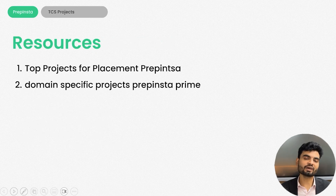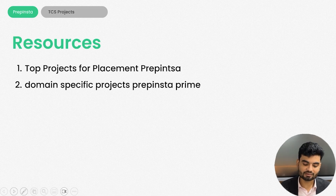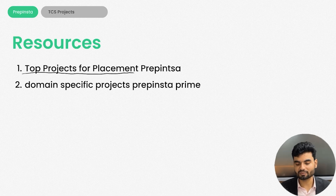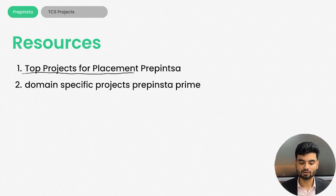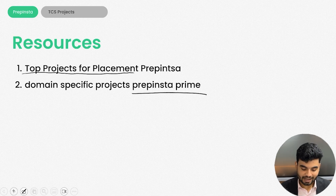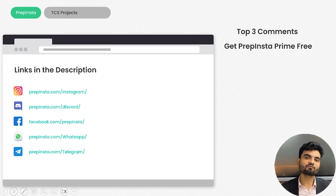For resources to find project ideas, one platform is PrepInsta itself — you can search for top projects for placement there and get many ideas. If you want to code from scratch, PrepInsta Prime has multiple courses with really cool projects, like a PhonePe clone. For example, if you're good in Java, you can find Java-specific courses there, which saves time as well.